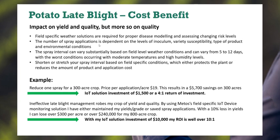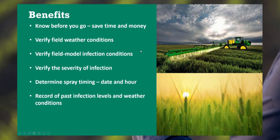Whether it's a small individual field or a large farm with multiple fields, there's still a very good return — and we haven't even accounted for the secondary effect on storage quality. You really know before you go: you save time and money, verify field weather conditions, and have a verified model of infection conditions and severity. You have a precise timing of when to spray by hour and date, an indication of spray window length — short or long — a record of past infections and when events occurred, and a SprayCast model inside that allows you to time your sprays in addition to the environmental conditions.